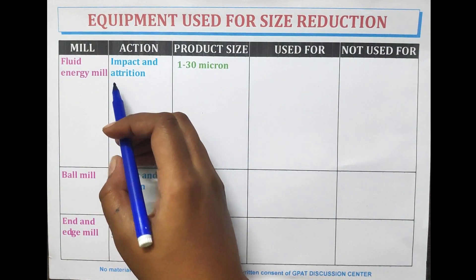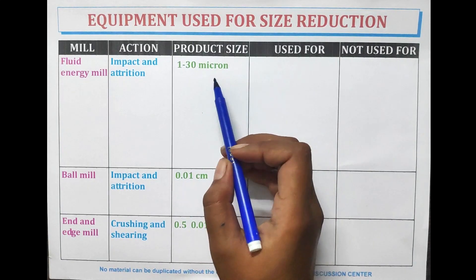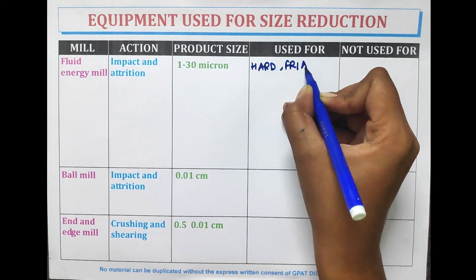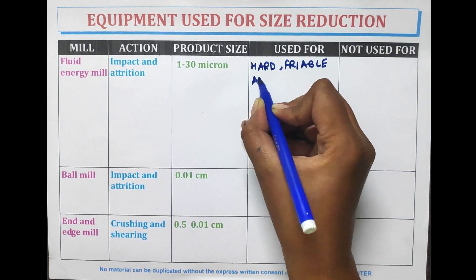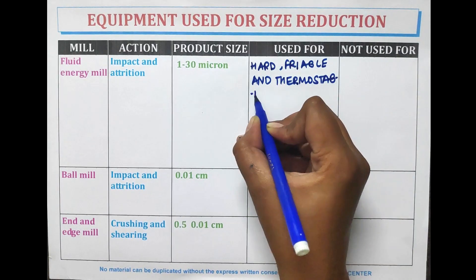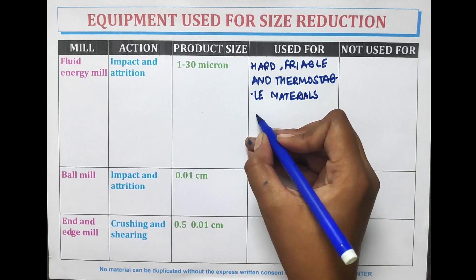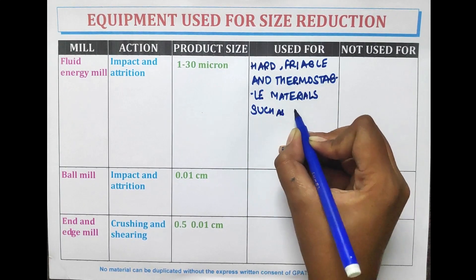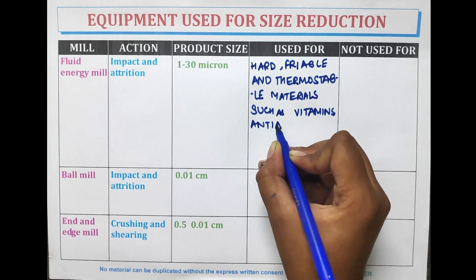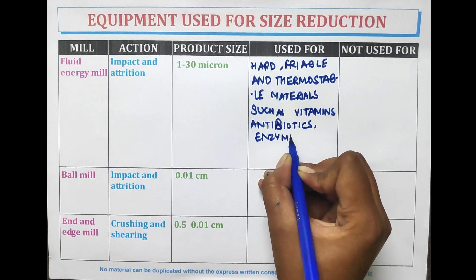The fluid energy mill works on the principle of impact and attrition. The product size is 1 to 30 microns. It is used for hard, friable, and thermostable materials such as vitamins, antibiotics, enzymes, and hormones.